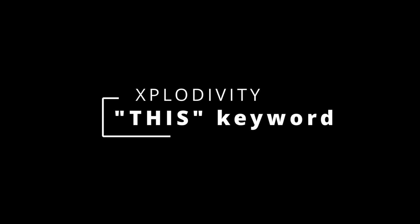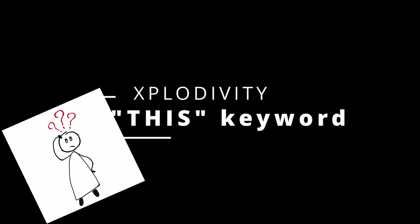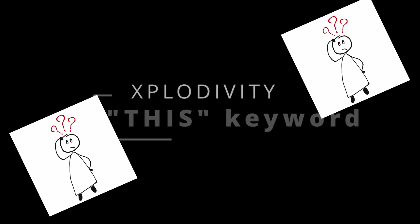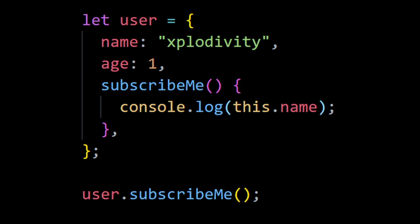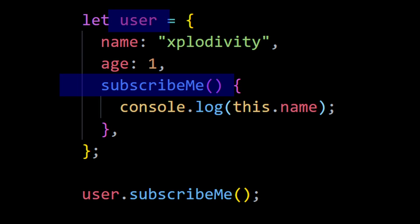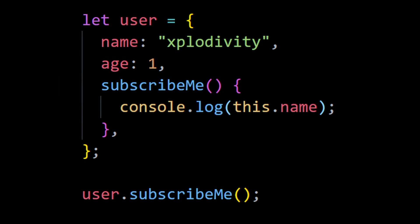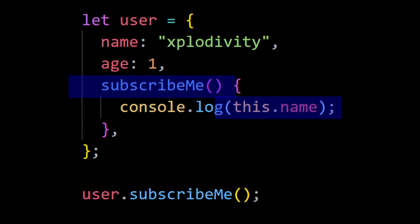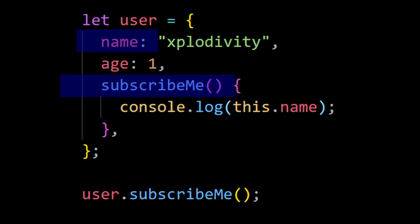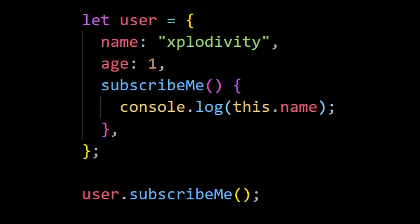The 'this' keyword in JavaScript can sometimes be confusing. Let's take the user object as an example — it has three properties: name, age, and the subscribe me method. A function within an object is called a method. It's common that a method might want to access the information stored in the object, so the subscribe me function would want to access the name or age property.